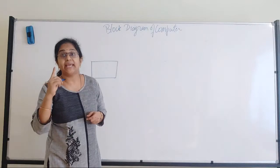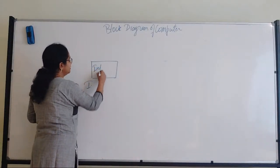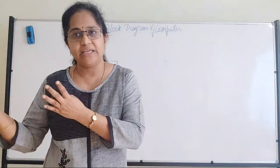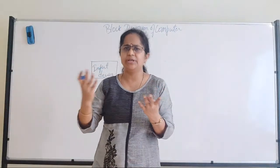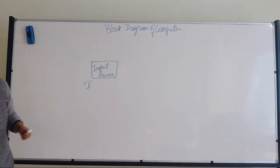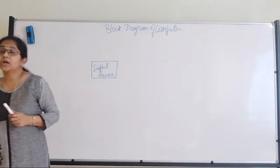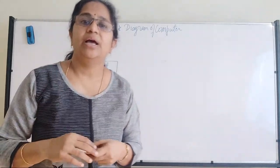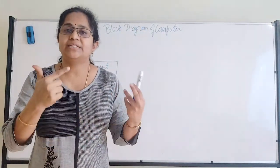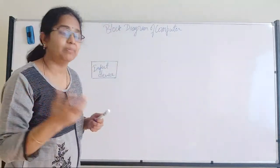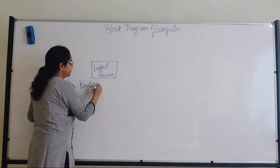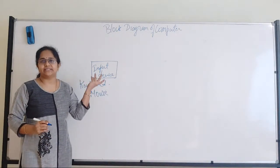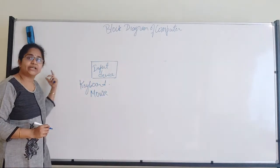The first component we talk about is the input device. What is an input device? It's a device which helps us to transfer anything from the external world to the system. Can you give me examples of input devices — components which help transfer data from the external world to the internal world? We can say keyboard, mouse — they are examples of input devices. Simple definition: an input device is a device which helps us transfer data from the external world to the system.